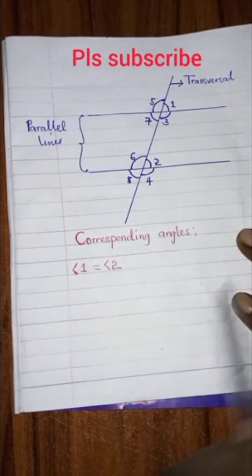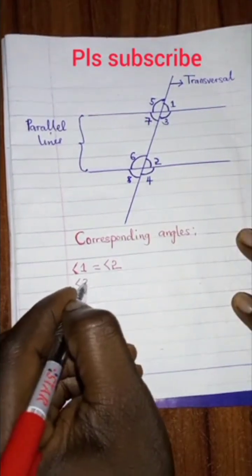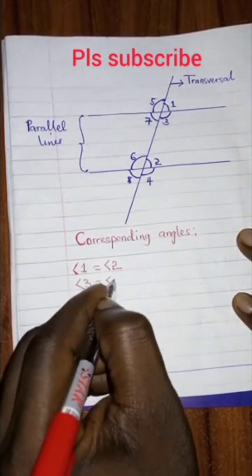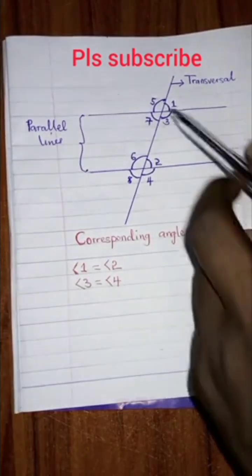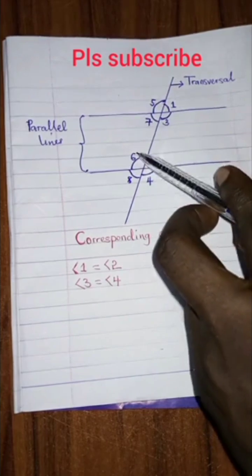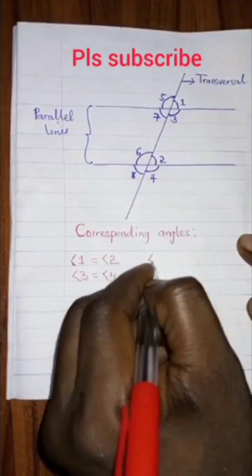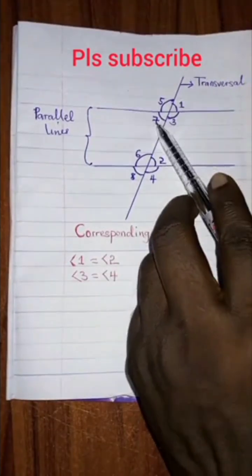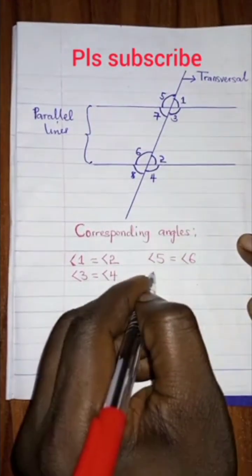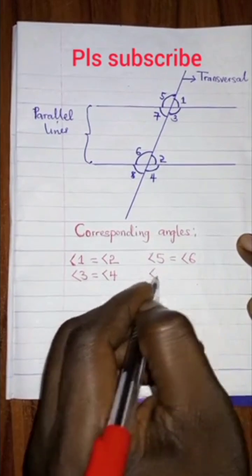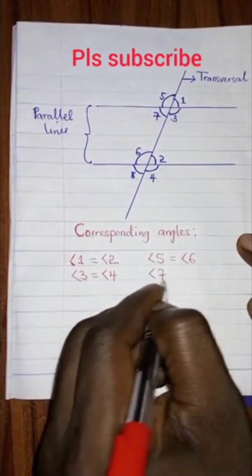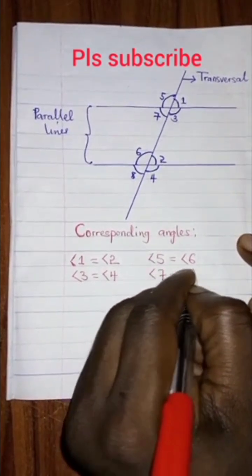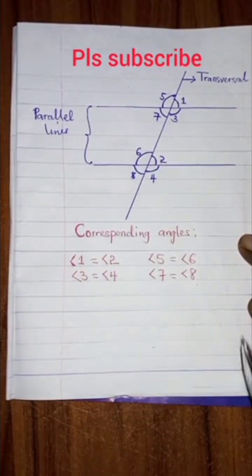Angle 3 equals angle 4 because they also lie on the same position. If you look at 5 and 6 there, you will notice that angle 5 equals angle 6 because they lie on the same position. Then angle 7 equals angle 8 because they lie on the same position.